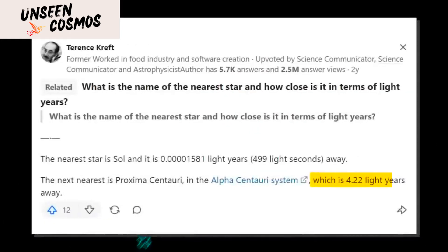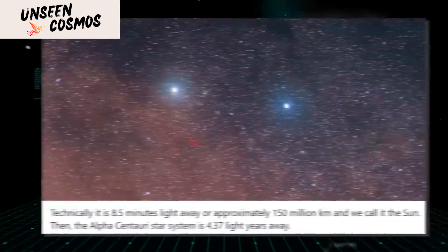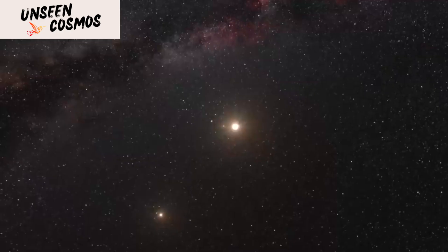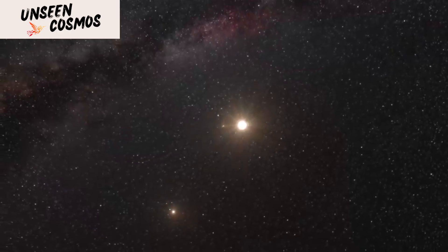The method proposed in the paper involves looking for the light emitted by a civilization that is using powerful lasers to communicate across interstellar distances. The idea is that a civilization could use a laser to send a signal to another star system, and the signal would be detected as a brief burst of light.